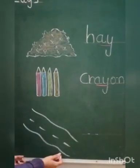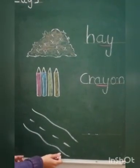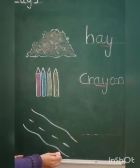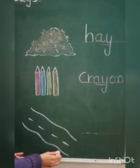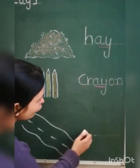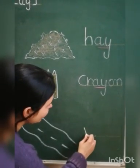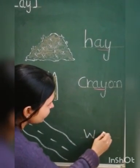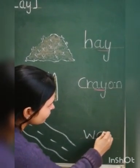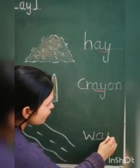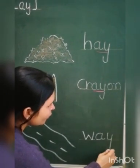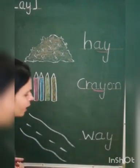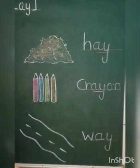Our next picture is way. Which picture is this? Way. And how do we write way? W, A, Y. Way.